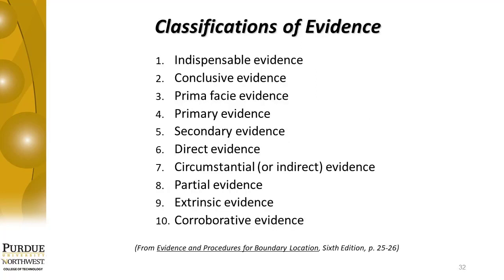Section 2-8 covers the classifications of evidence — a very important topic. There are ten different classifications, and you've probably heard these terms before, but it's very important to understand how they differ from one another. The textbook gives examples in most cases, most of them related to surveying. You must make sure you understand that there are kinds of evidence, classifications of evidence, and types of evidence, and be able to differentiate between these.